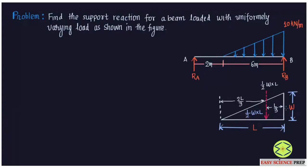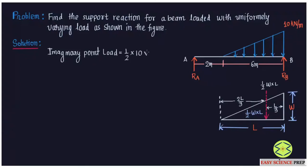So we can find the location and value of the imaginary point load. Now applying this to our problem, the imaginary point load is (1/2) × 10 × 6 = 30 kilonewtons. This 30 kN load acts at a distance of L/3 = 2 meters from point B.